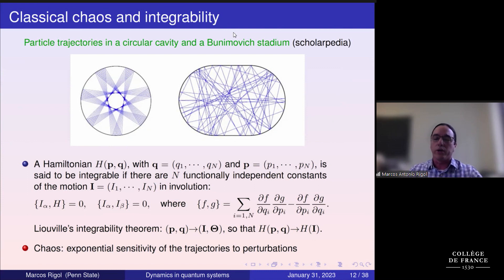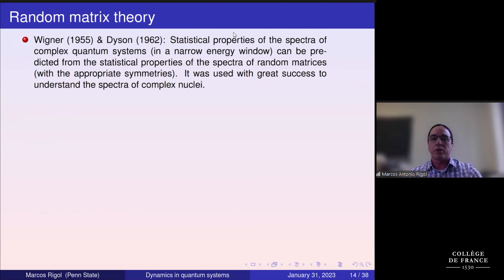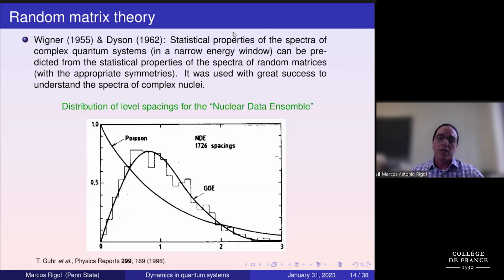The other limit is chaos — exponential sensitivity of trajectories to perturbations. Place a particle in a billiard and slightly change the angle; after a few collisions, positions and velocities become completely uncorrelated. In the quantum world, chaos is related to random matrix theory, a field that started in the 1950s when Wigner and Dyson tried to understand nuclear spectra. Rather than focusing on details, they described statistical properties using random matrices with appropriate symmetries, and found that level-spacing statistics matched random matrix theory.